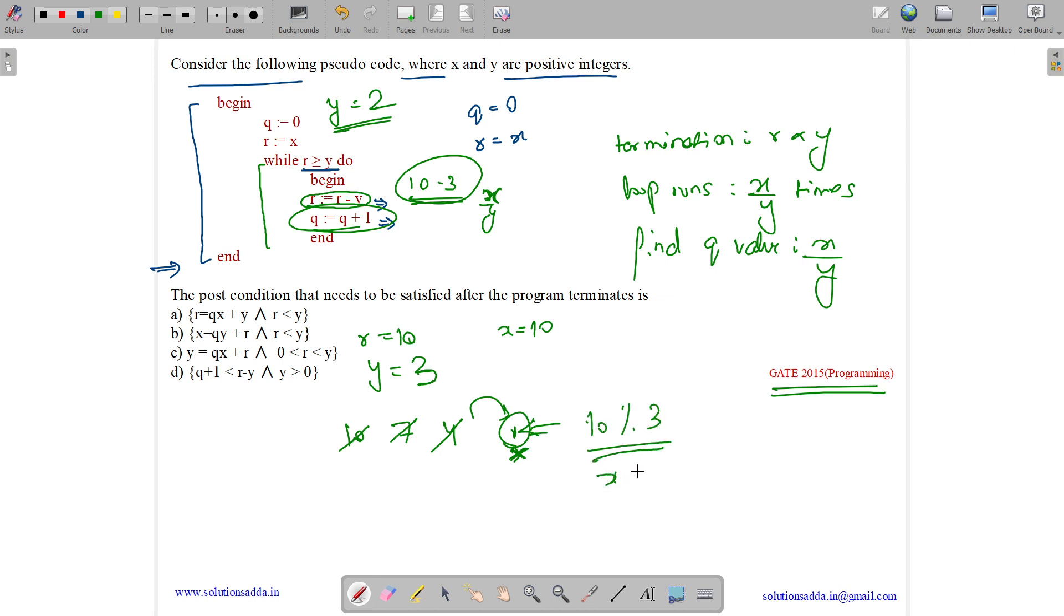or we can say x mod y. So the final r value will be x mod y.